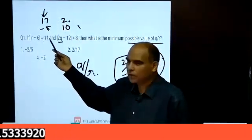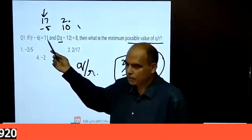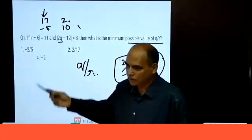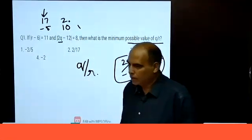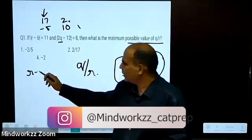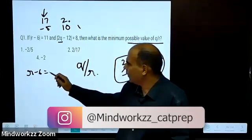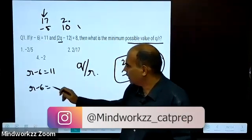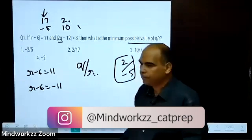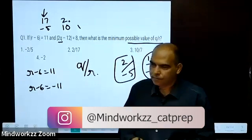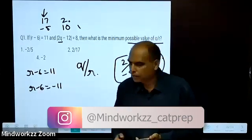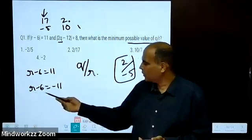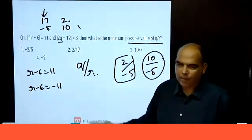17 minus 6 is 11, yes. So mathematically solving it: r minus 6 is equal to 11, or r minus 6 is equal to minus 11. So r is 17 from the first case, or r is minus 5 from the second.